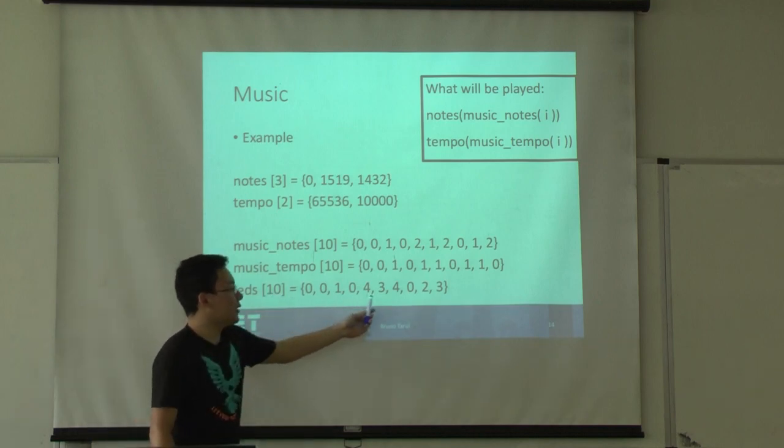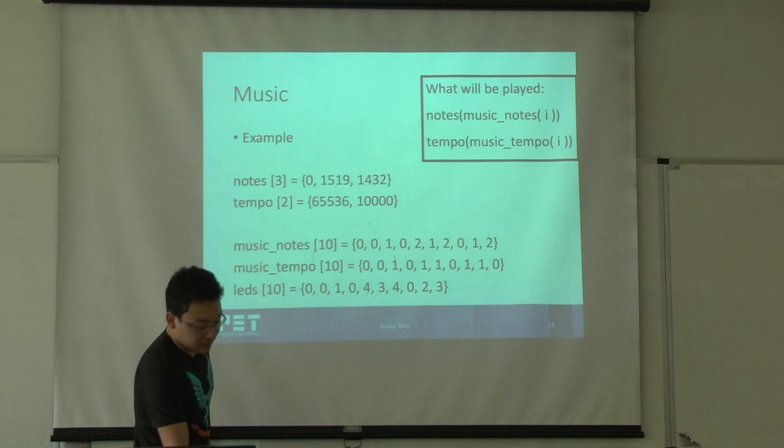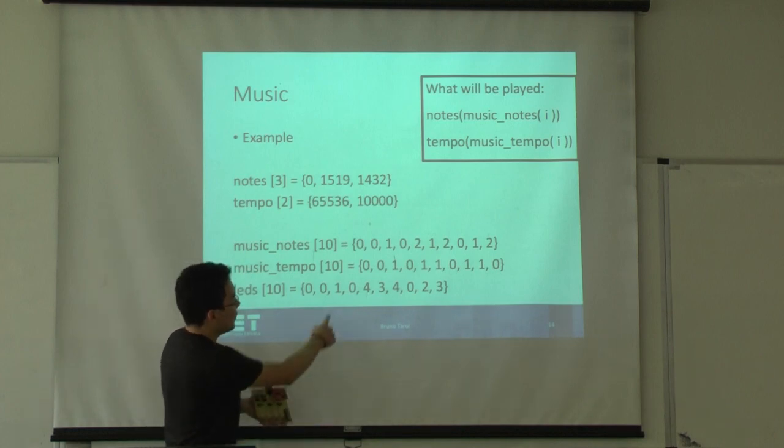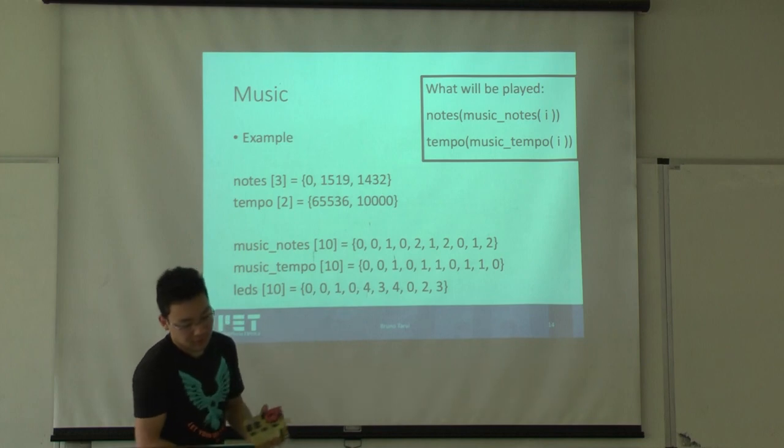The LED is a very simple vector that only chooses which LED will be lighted in the line. This is only the first line here. When the LED is one, LED one is activated, and when zero, no LEDs are activated.